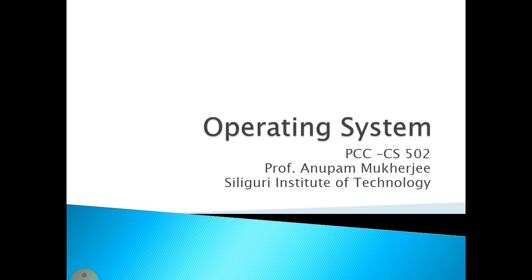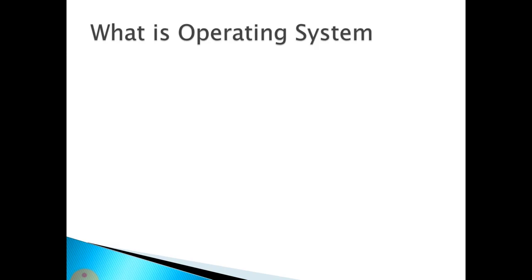So these are different flavors or types of operating systems. The first question that comes to mind is: what is an operating system? We can say that an operating system is a program that acts as an intermediary between a user of a computer and the computer hardware.